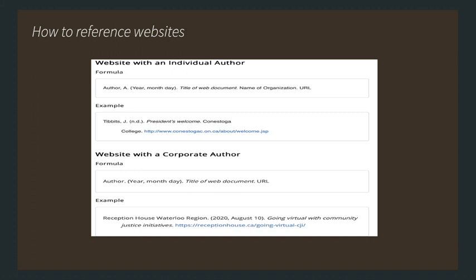For example, a Conestoga College webpage by Dr. Tibbetts would be: Tibbetts, J. (n.d.). President's Welcome [in italics]. Conestoga College. [URL]. For websites produced by a company or corporation with no named author, use the name of the organization, the year, month, day, title of the web document, and the URL.